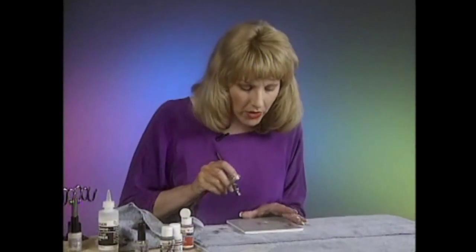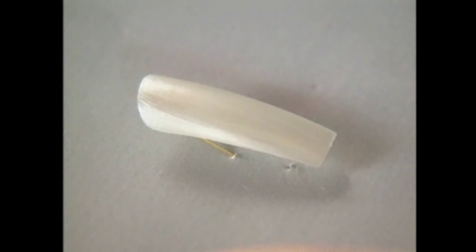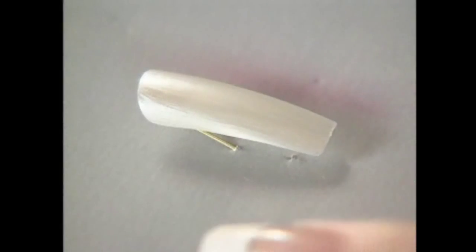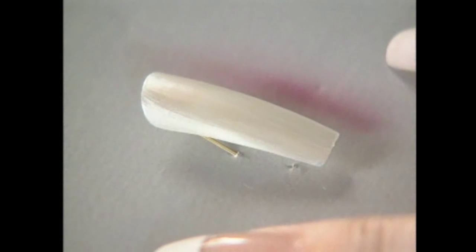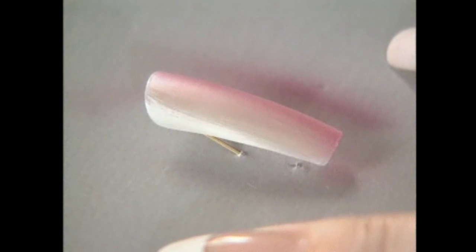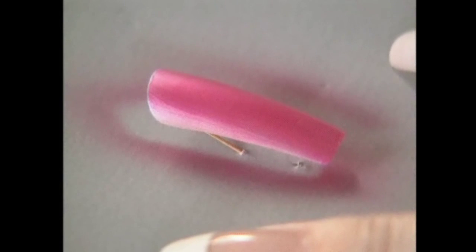Always start spraying off your work on the side to make sure you have the spray pattern that you want. Then go to the nail and put a nice even coat on the nail. Take your time and build up the color slowly. This is where people tend to make mistakes by over-spraying the nail. They tend to spray too much color too fast and get it wet.